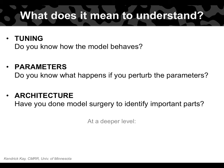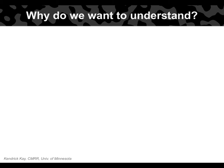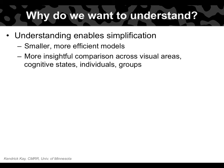We can of course go even deeper — maybe we only understand a model if we can predict its responses in our head without a computer, or only if we can implement it from scratch including all free parameters. These are good criteria, though perhaps too demanding for deep neural networks at this point. Why do we even want to understand these models? I believe understanding is important because it enables simplification, leading to simpler and more efficient models. More importantly, simple models allow us to effectively compare what changes across visual areas, cognitive states, individuals, or groups with different disorders.